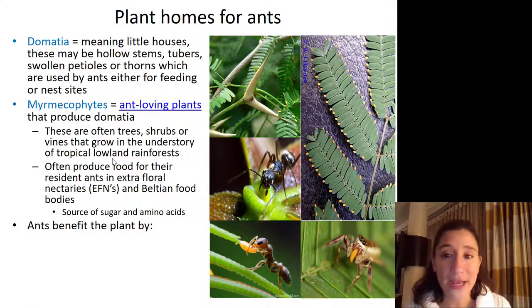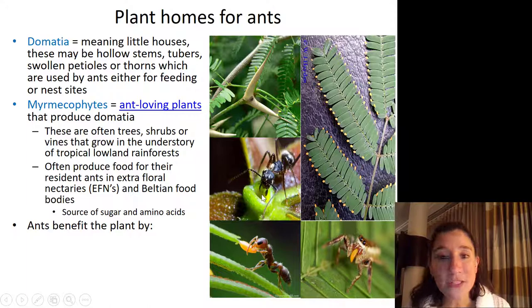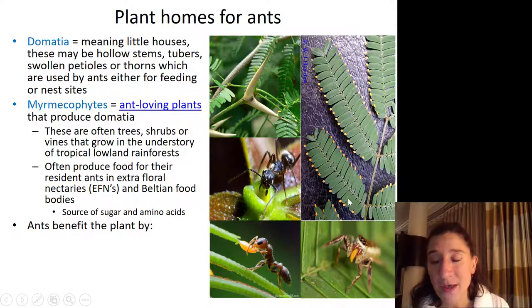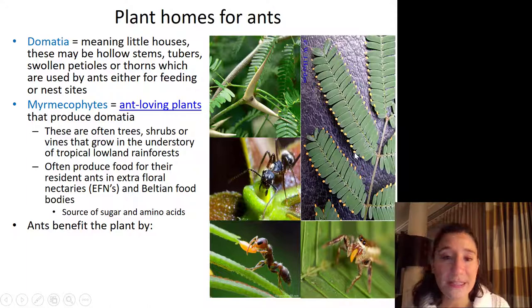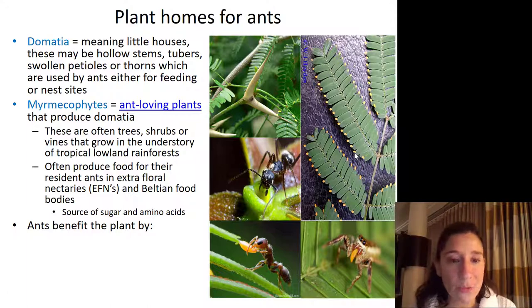In exchange for letting the ants guard their space, the plants provide not only homes but also food. They have extra-floral nectaries — structures around the base of the leaves that the ants can drink sugar water nectar from. They also produce Beltian food bodies, shown here on the edges of the leaves as little orange structures, which are a nice source of sugar but also of amino acids that the ants need to make their proteins.